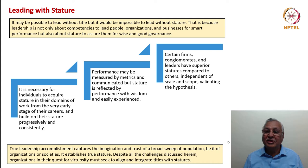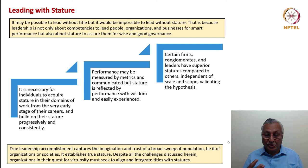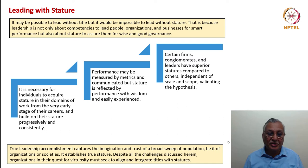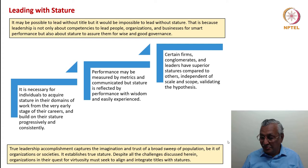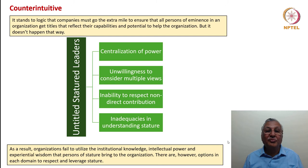Certain firms, conglomerates, and leaders have superior stature compared to others, independent of their scale and scope — which only validates the hypothesis that stature is much more tangible, recognizable, and lasting than performance. True leadership accomplishment captures the imagination and trust of a broad sweep of population, whether organizations or societies, and establishes the true stature of an individual or organization. Despite all the challenges discussed, organizations in their quest for virtuosity must seek to align and integrate titles with stature — then the organizations become extremely authentic and extremely role-modeling entities.